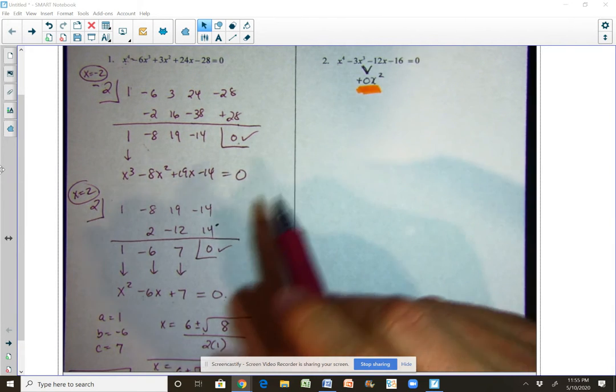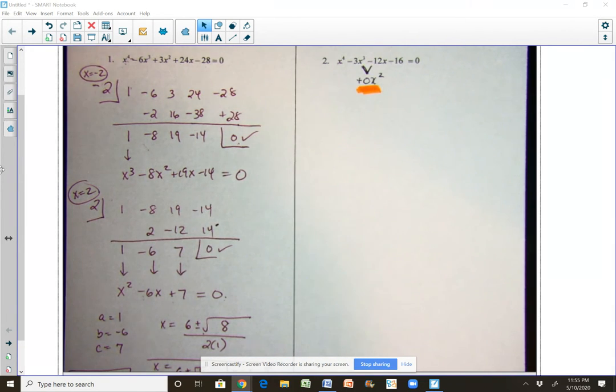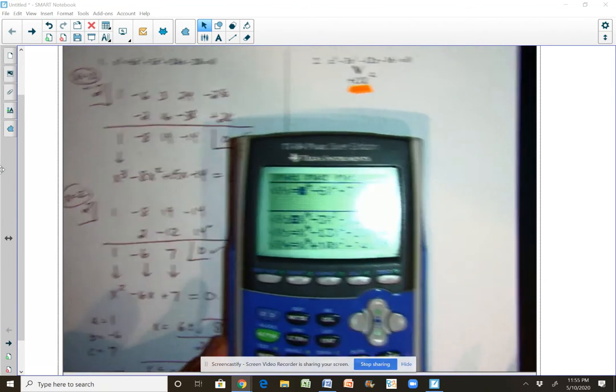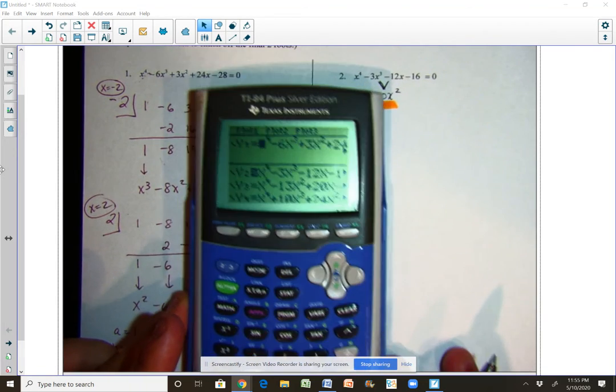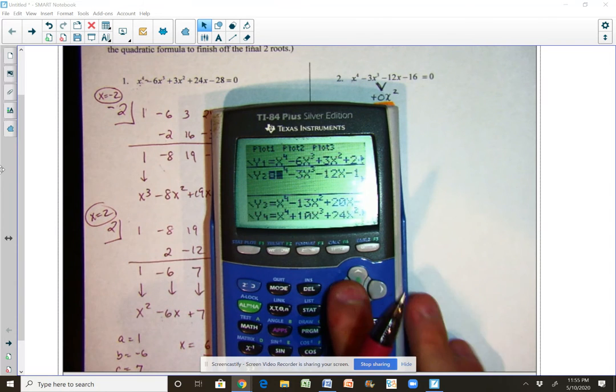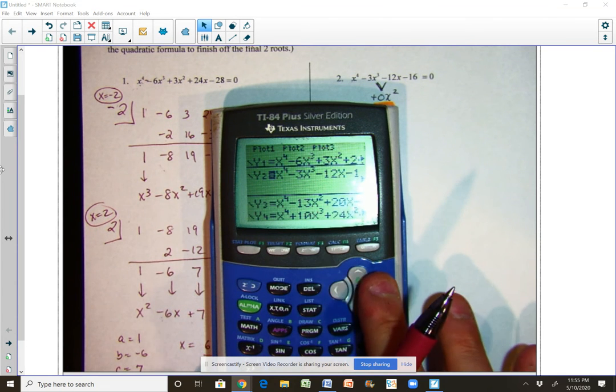So we're going to have to find another means to do this and that other means is going to be again using the calculator to help us solve by factoring. All right, so I have the equation thrown in here, it's in the second y2, the first one was the first example we did, so it's right here highlighted.